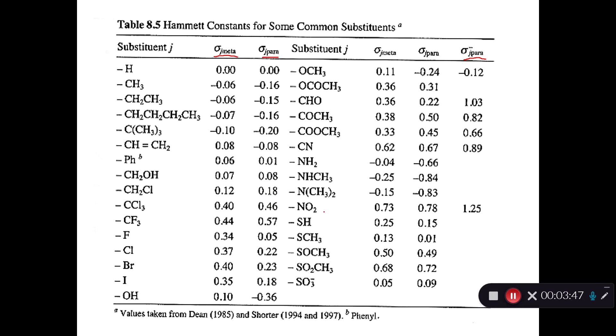You have to use these special sigma minus for the para position when there's direct resonance. So for example, nitro groups can do a lot of resonance. So in the para position, you use that value. So these should make some sense. We know that methyl groups and alkyl groups push electron density, and so they have negative Hammett constants, right? These are all negative. Whereas halogens withdraw electron density, and so they all have positive Hammett constants.